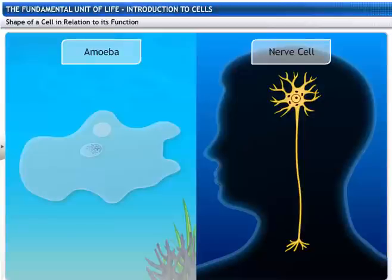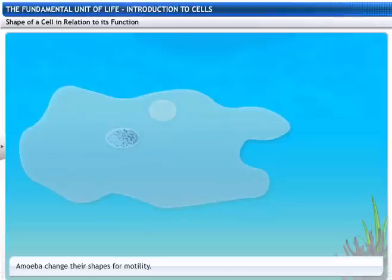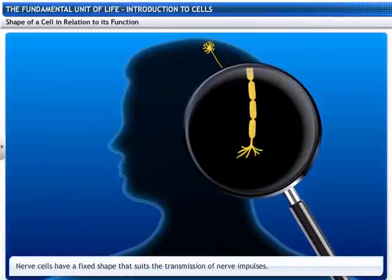The shape of a cell is related to the specific function it performs. Cells like amoeba change their shapes for motility. Cells like nerve cells have a fixed shape that suits their function of transmitting nerve impulses.